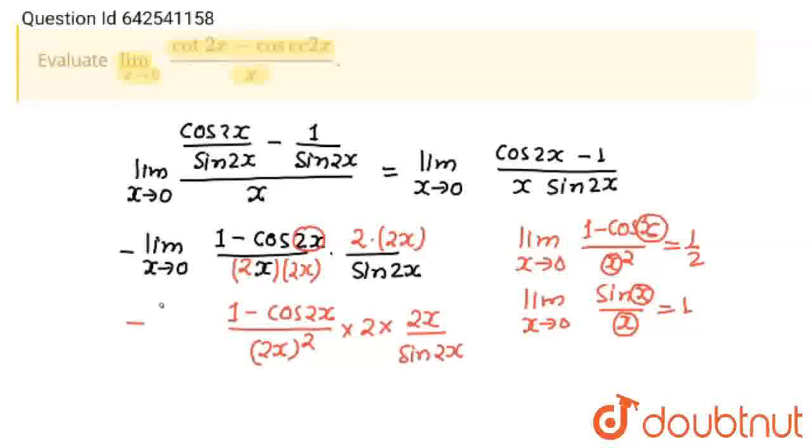Now see, this will become 1 minus cos 2x upon 2x whole squared into 2 into 2x upon sin 2x, minus limit x tends to 0. So this formula according to this value will be 1/2. And there is minus sign, so this will be minus. Now, into 2.